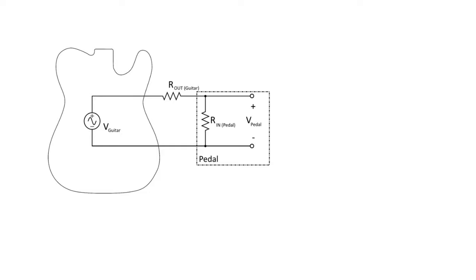Now if we attach a pedal to our guitar, we're going to see that the output voltage of the pedal is actually going to be based on the interaction between the input resistance of the pedal and the output resistance of the guitar. It's actually a voltage divider. And that is represented by this equation here.